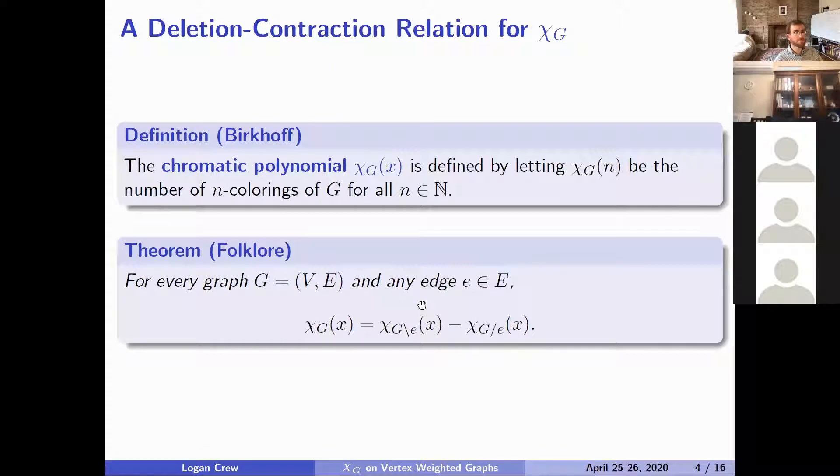What's interesting about this: the chromatic polynomial is the polynomial function that satisfies that χ_G of n for all positive integers n is the number of n colorings of the graph, where n colorings mean that it's a proper coloring. All colorings in this talk are proper.